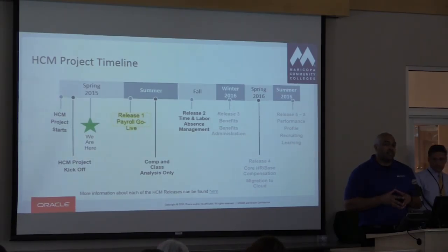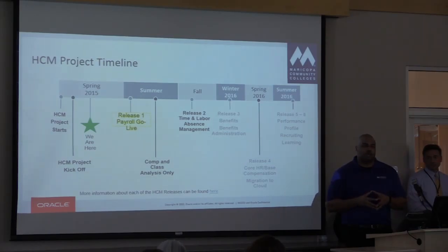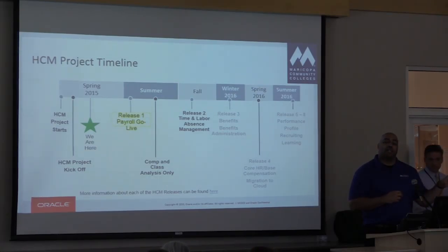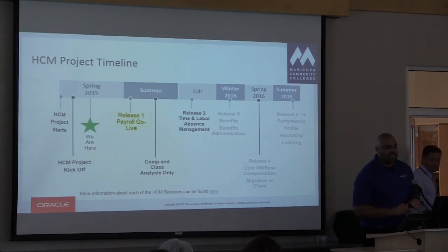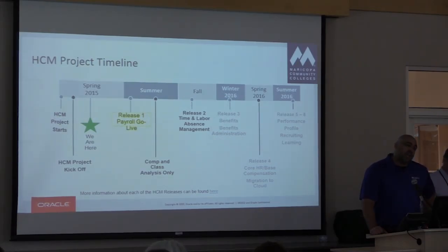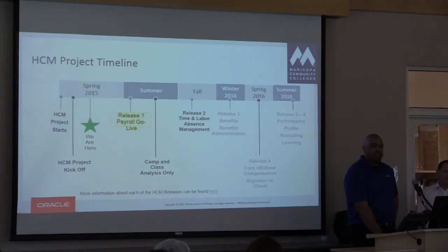We haven't nailed in the exact summer date yet. We know FMS is going live on July 6th, and HCM release one will go after that — sometime between July 6th and the beginning of the academic year. FMS stands for Financial Management System — it's the system replacing CFS. Carl is actually the project manager lead on FMS. We'll now turn it over to Carl to talk about details of this release, and during Q&A we can discuss any pieces of HCM or FMS.